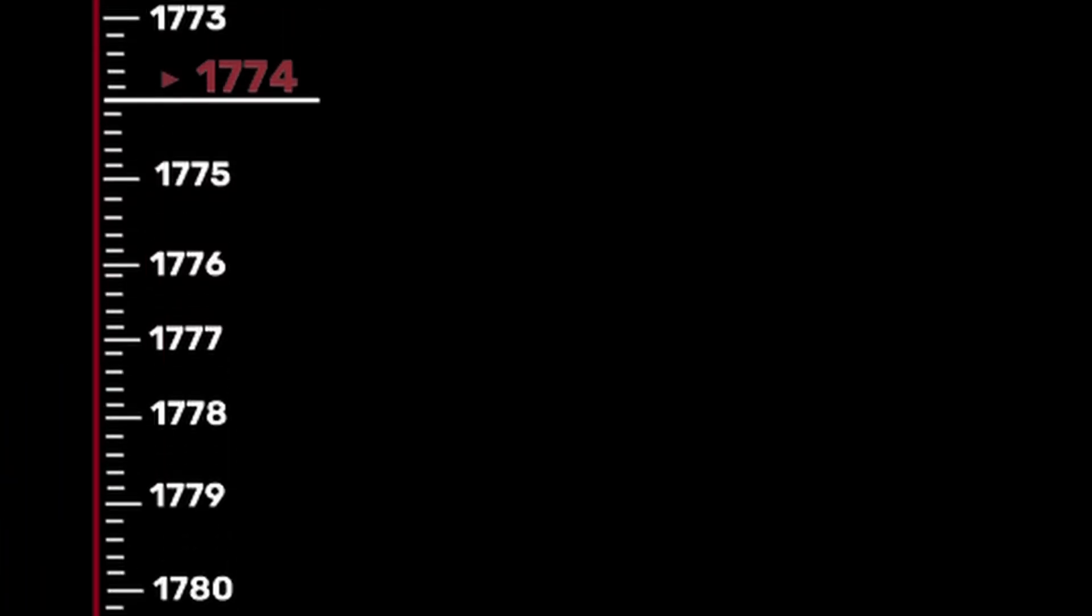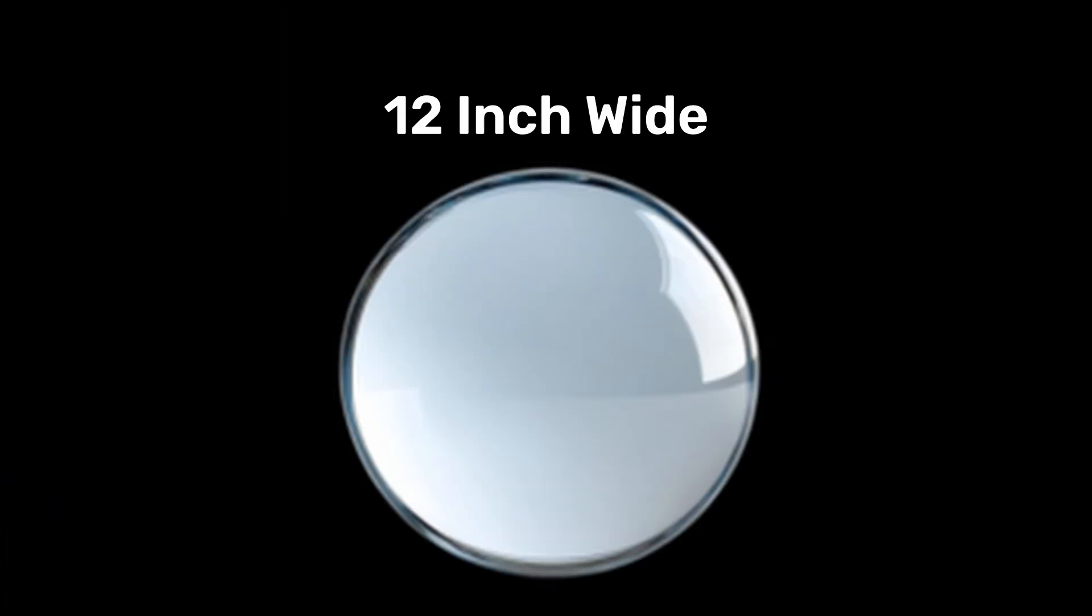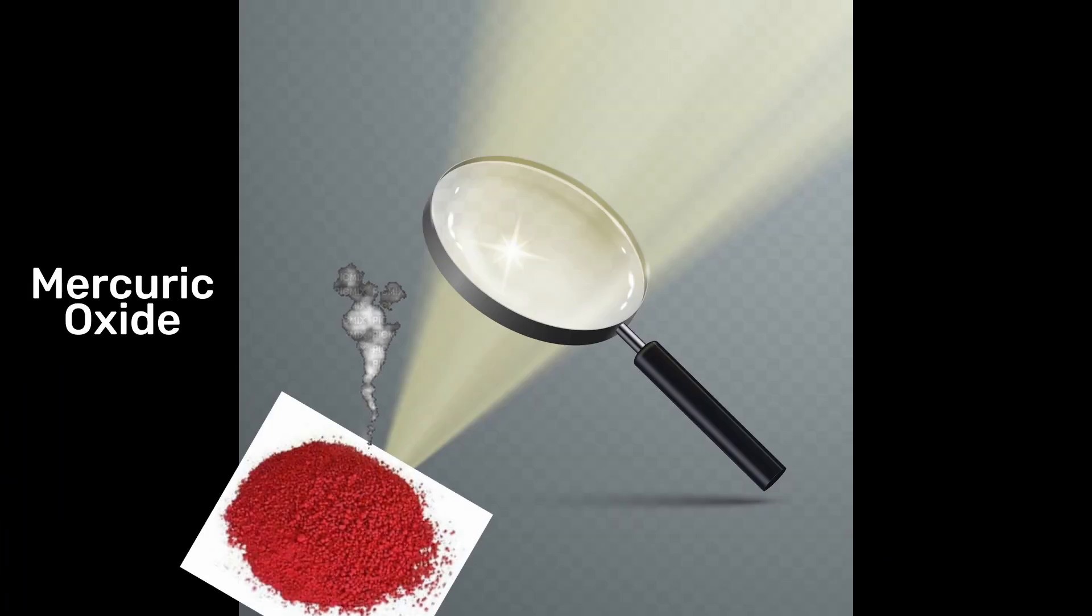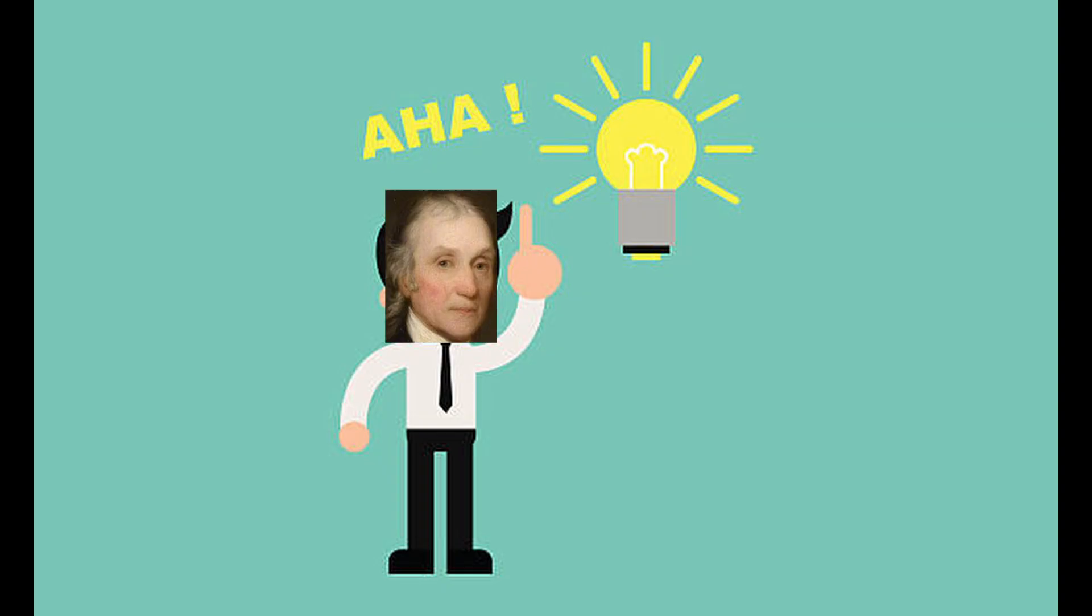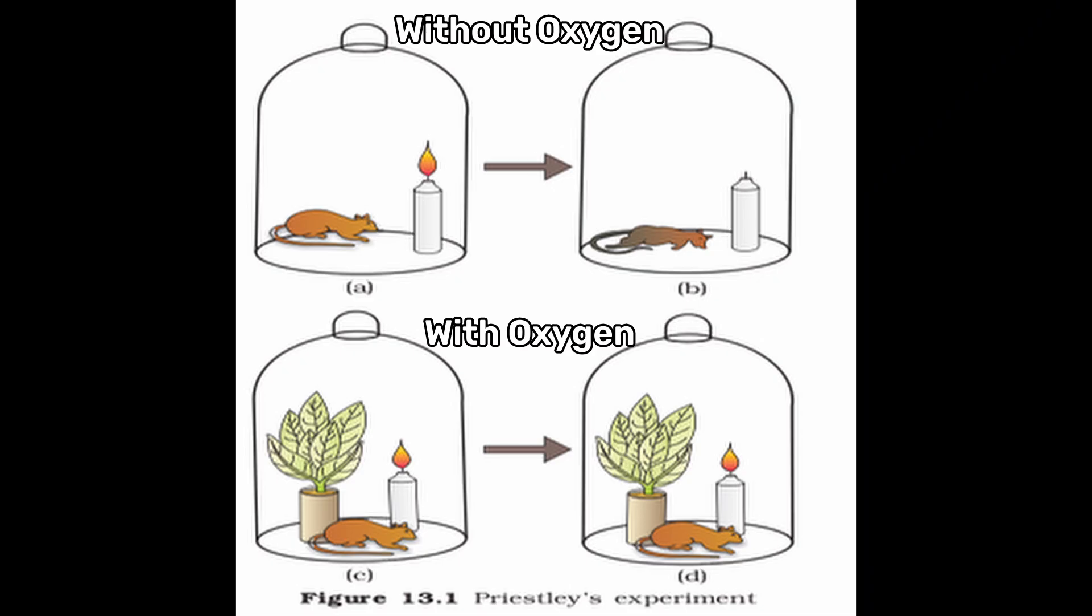Oxygen was discovered in 1774 by Joseph Priestley when he used a 12-inch wide glass lens to focus sunlight on a lump of mercuric oxide. Priestley found that a candle would burn and a mouse would thrive in this gas.